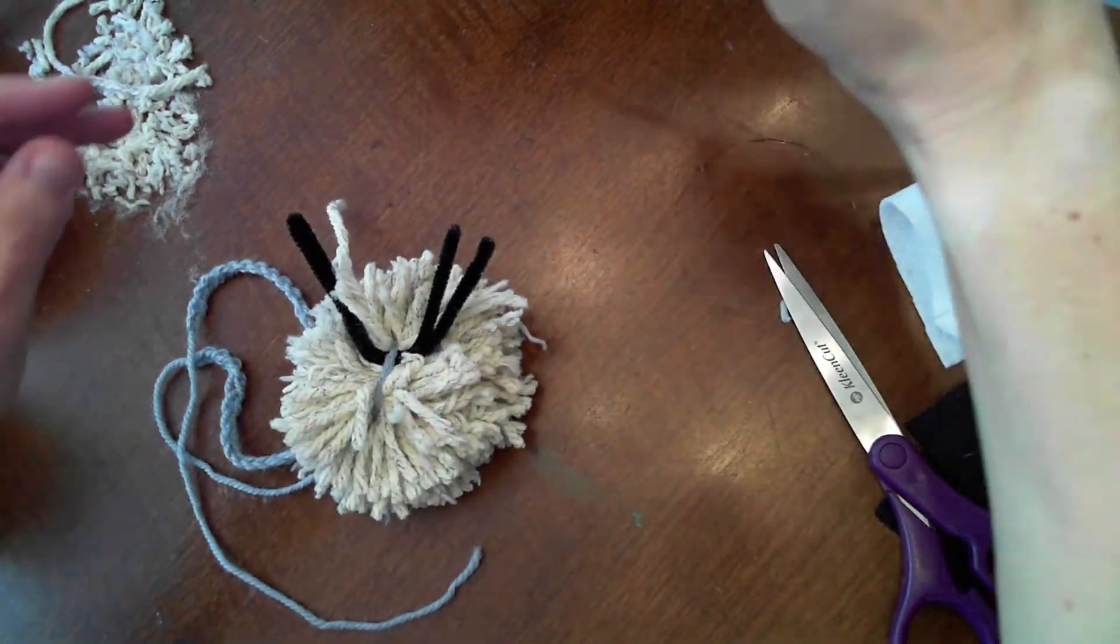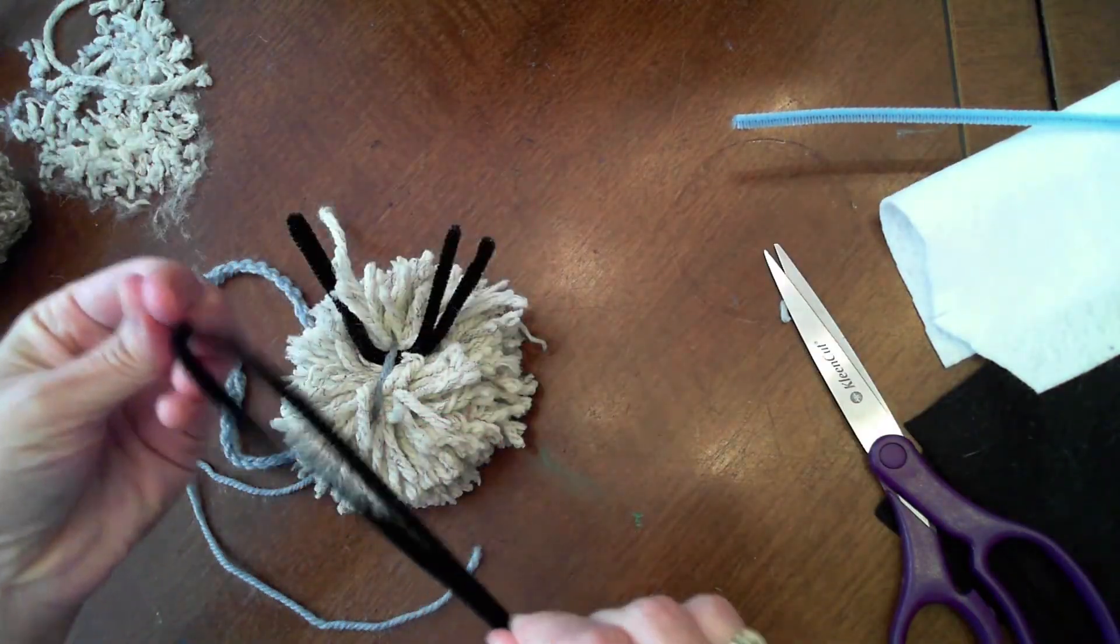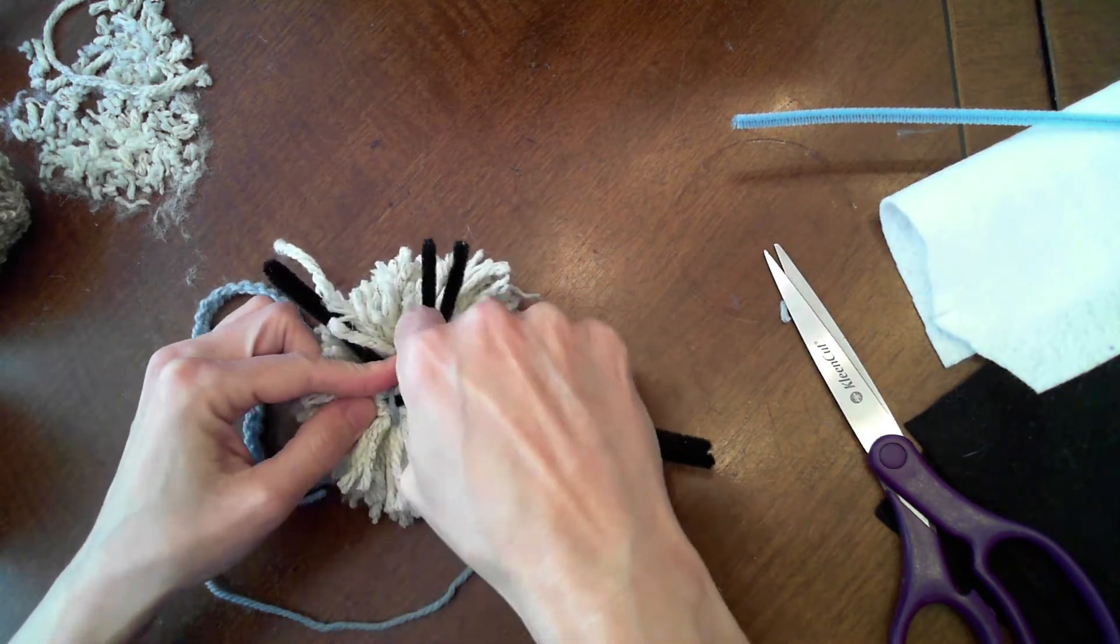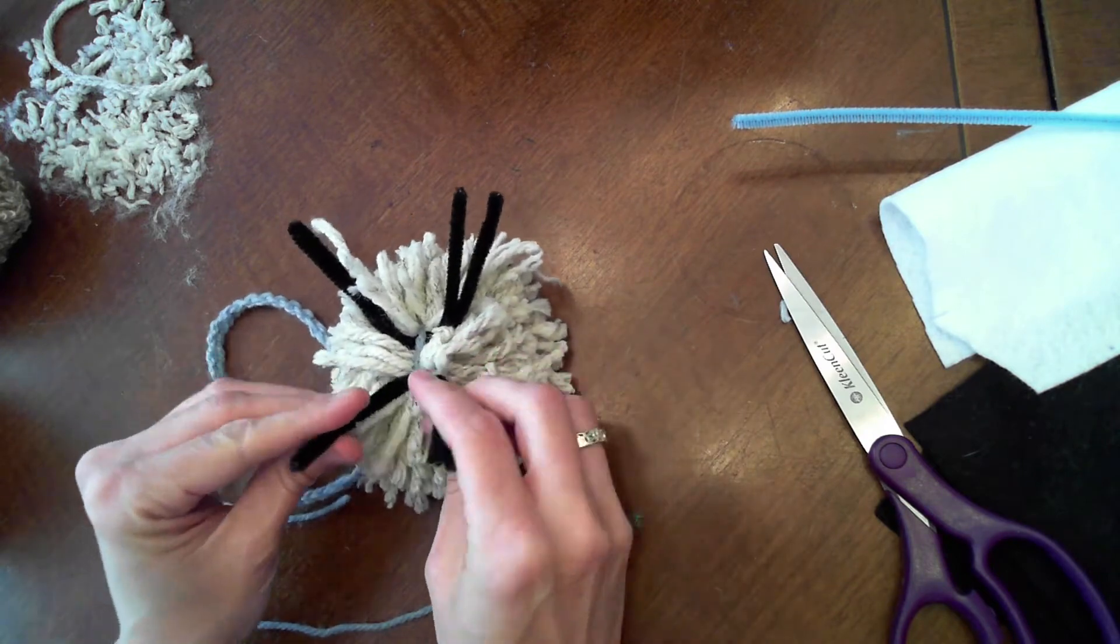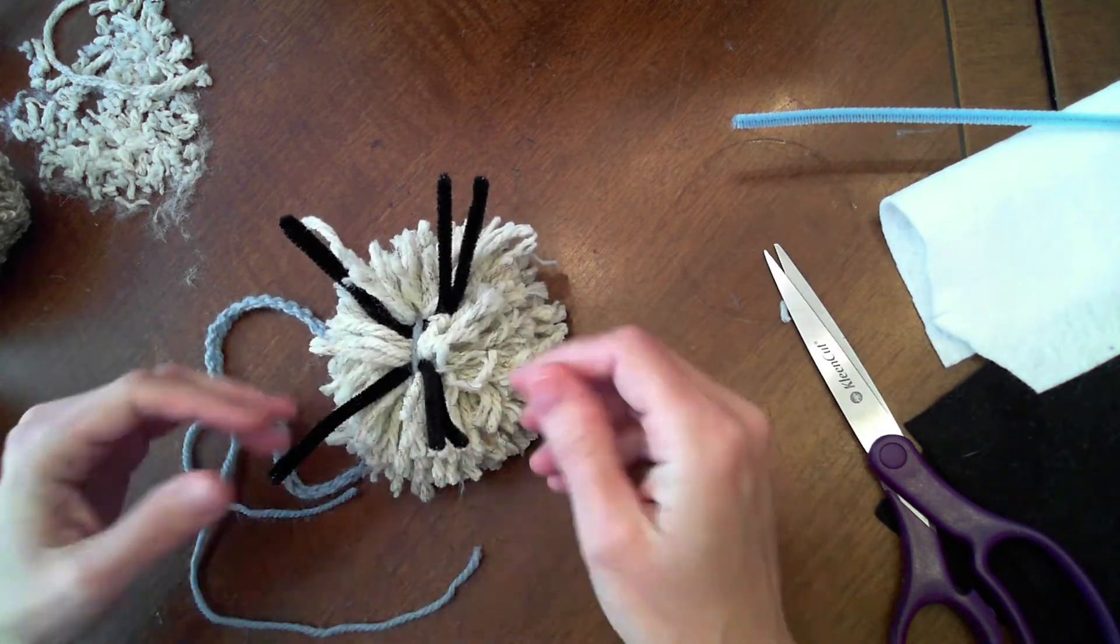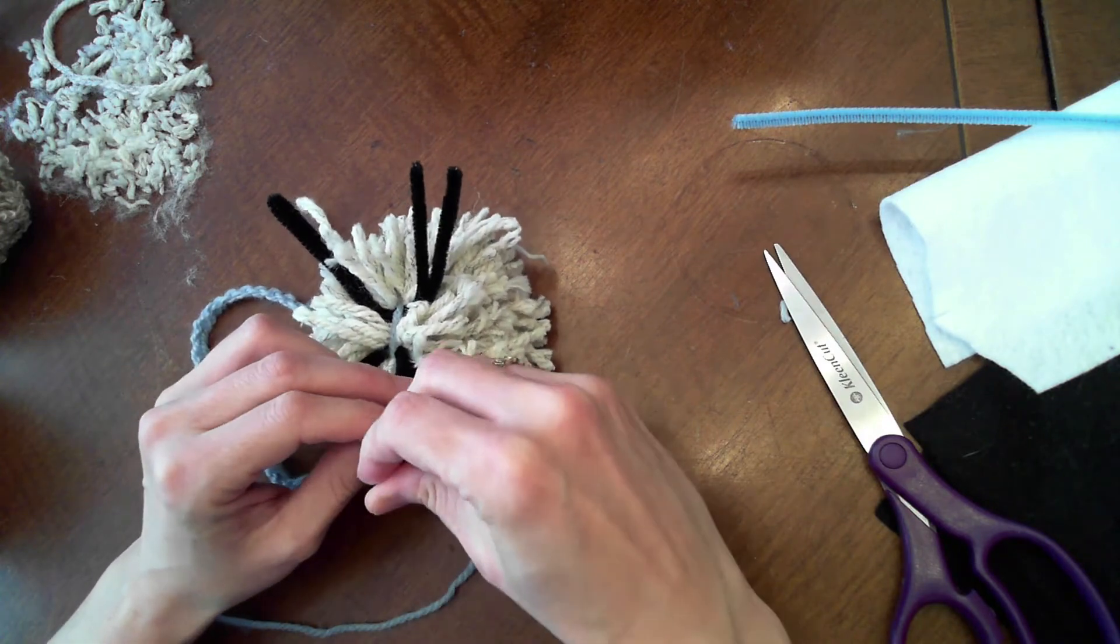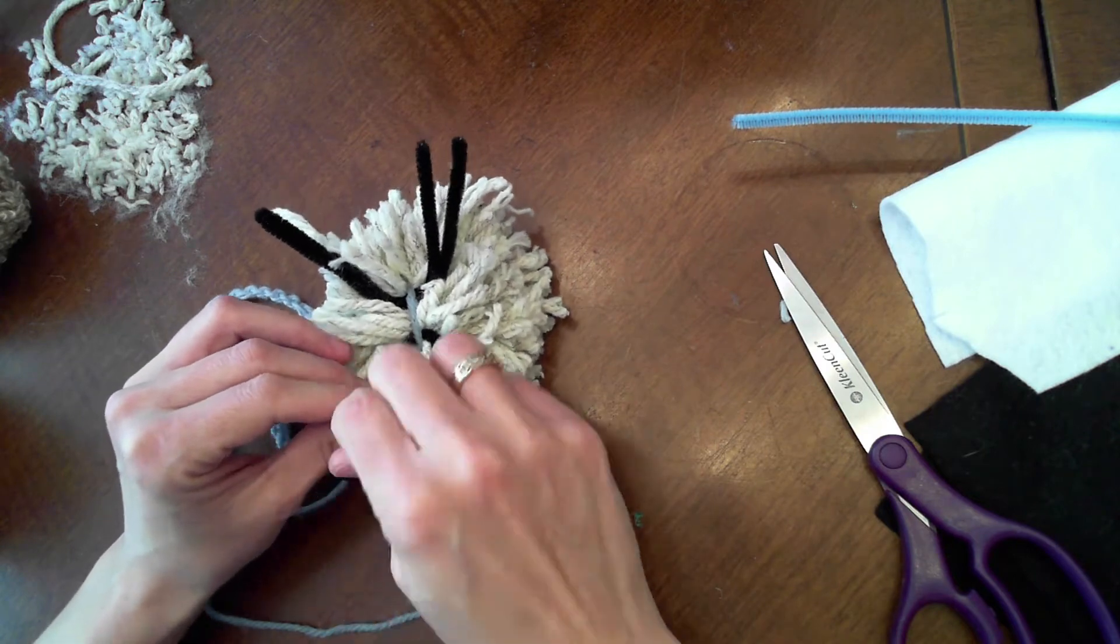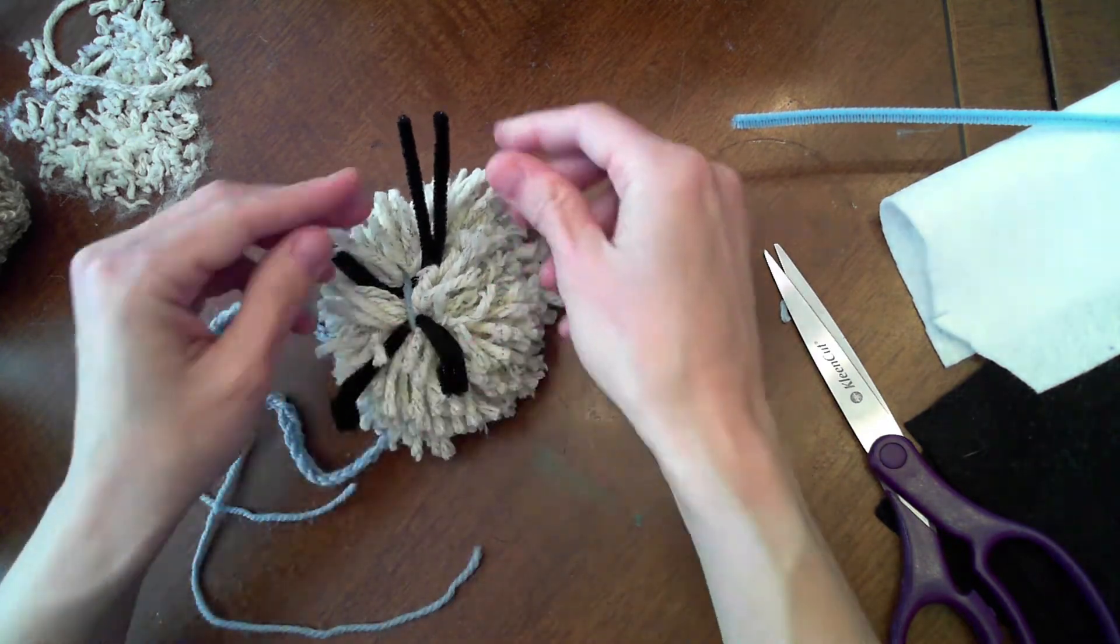We're going to grab another black pipe cleaner, fold it in half, slide it under and we're going to angle it the other direction. I like to then roll the edges of the pipe cleaners once or twice and make these cute little feet to stick out.